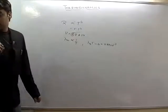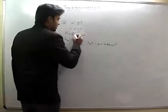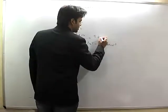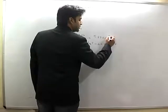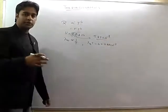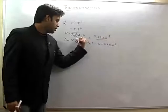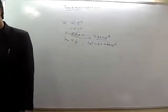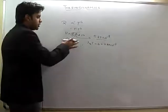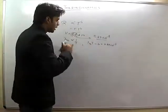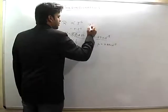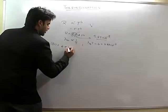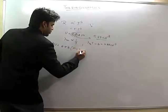Sigma is Stefan's constant, whose value is equal to 5.678 into 10 raised to power minus 8. The net radiant energy emitted per unit time is given as E into sigma into A into T raised to power 4 minus T₀ raised to power 4.